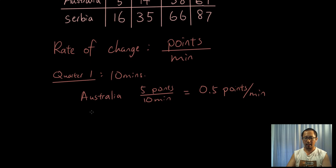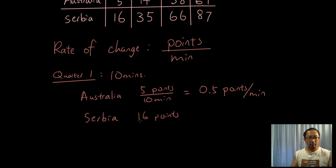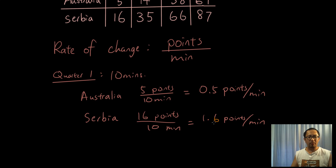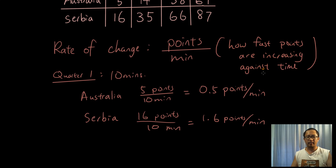Now let's look at Serbia. They got 16 points over 10 minutes, so their overall rate of change in points per minute is 16 divided by 10, which is 1.6 points per minute. That's how fast Serbia was increasing their score. Rate of change in points per minute — you can think of it as how fast your points are increasing against time. Serbia was already doing better than Australia.